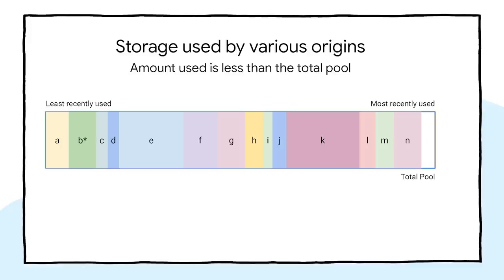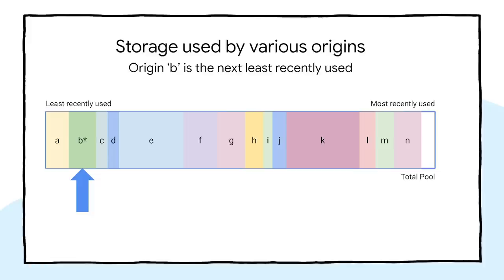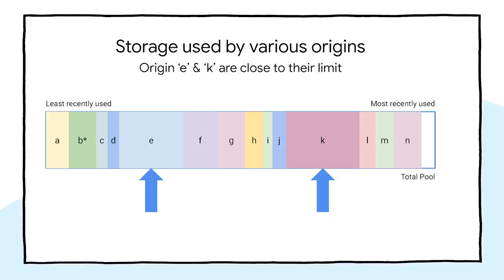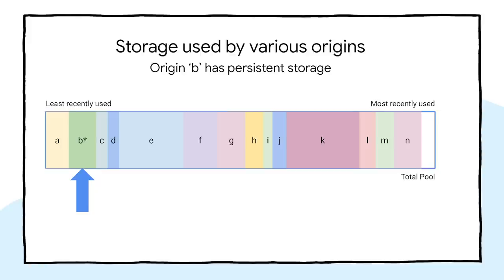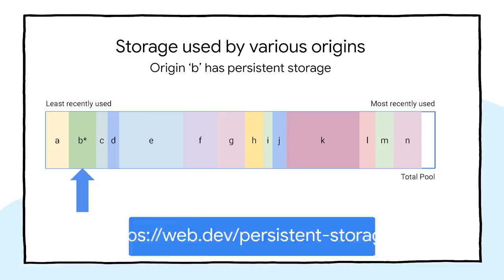Let's take a look at a specific example of how automatic eviction might happen in Chrome. Origin A is the least recently visited site, Origin B is the next least recently visited site, and so on. Origin E and Origin K are getting close to their quota limits but haven't reached it yet, and the overall usage is less than the total quota, so nothing is going to be evicted. Origin B has a star next to it because it was granted persistent storage, meaning it can only be deleted by the user. Check out my article on web.dev for more info about persistent storage, when you should be using it, and how to request it.